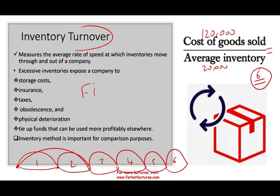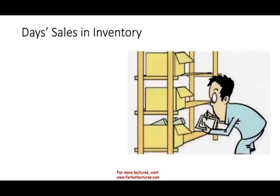We also have to be careful about which inventory method we are using. If one company uses FIFO and another uses LIFO, you might have two different figures. Most companies disclose which method they use, and sometimes they indicate what the numbers would be under the alternative method.